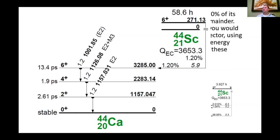Only 1.2% of the decays of that metastable state will not emit that gamma ray. And those 1.2% that do not emit the 271.13 will emit the other three gamma ray energies shown on this level diagram.